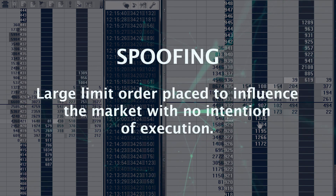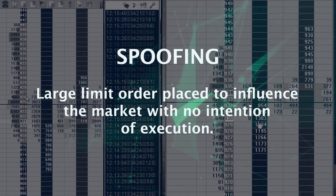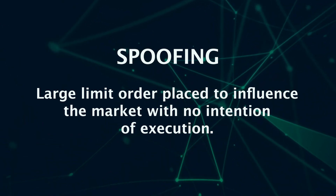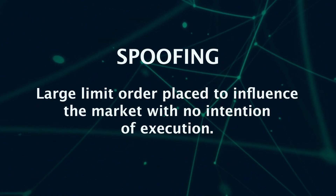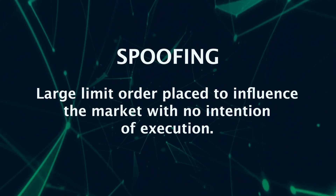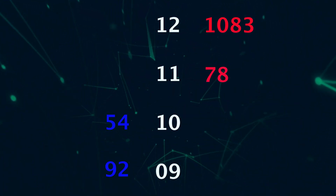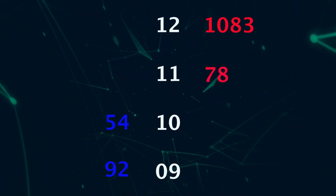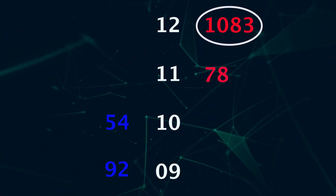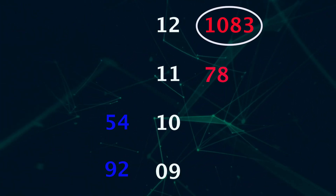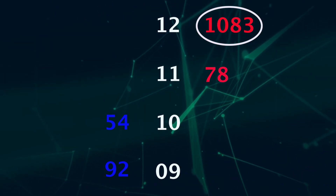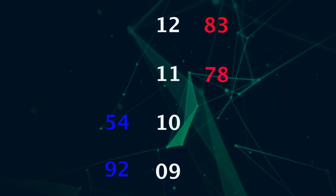This is where we introduce what spoofing is. Spoofing is a methodology where a trader places a substantially large limit order, giving the illusion of massive demand or supply for a product, but with no intention of executing it. For example, if Apple is trading at $10, the trader places a limit order at say $12 for 1,000 lots, creating an illusion that there are lots of sellers. When the market trades around $11, he'll cancel that $12 order.